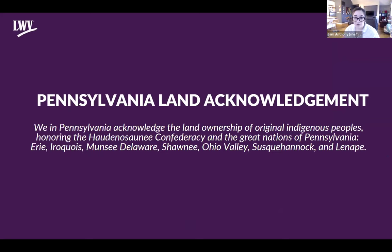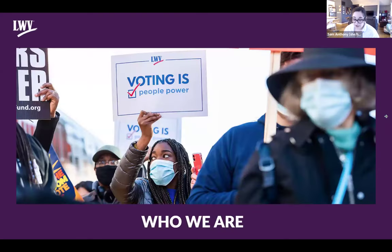We begin this evening with a land acknowledgement. Colonial Pennsylvania boundaries were first drawn in 1681 over original nations' land. We in Pennsylvania acknowledge the land ownership of original indigenous peoples including the Haudenosaunee Confederacy and the great nations of Pennsylvania: Erie, Iroquois, Muncie, Delaware, Shawnee, Ohio Valley, Susquehannock, and Lenape. We honor all original nations of the past and those among us today.